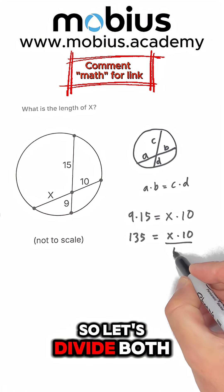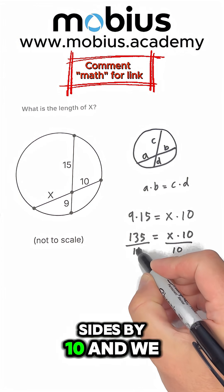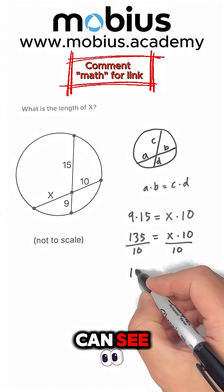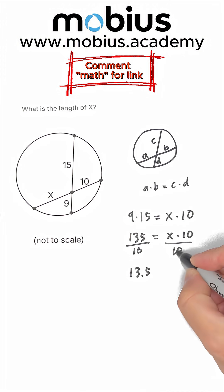So let's divide both sides by 10, and we can see 10s cancel,